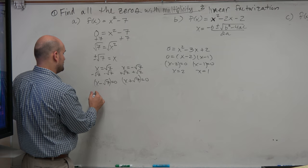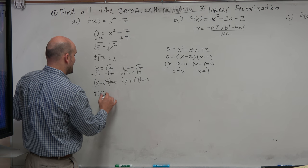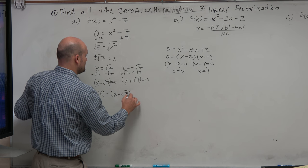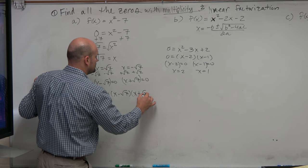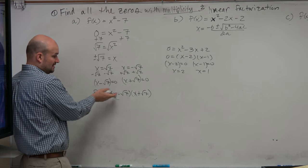So now, if I wanted to write the linear factorization, I could just say f of x is equal to x minus the square root of 7 and x plus the square root of 7. That's the linear factorization.